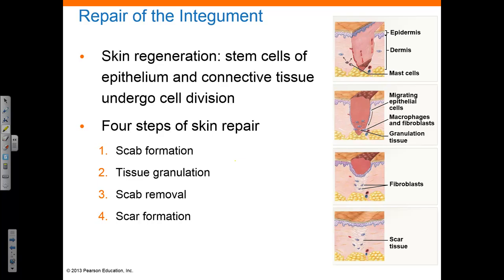Cells of the stratum basale begin dividing to form new epidermal cells to replace those damaged or lost. Macrophages and other phagocytic cells begin cleaning up debris from damaged cells. Fibroblasts and connective tissue stem cells begin to divide and aid in the repair of the dermis. Fibroblasts produce collagen and are supplied by capillaries that increase blood flow to the region. The network of blood clot, fibroblasts, and capillaries is known as granulation tissue.